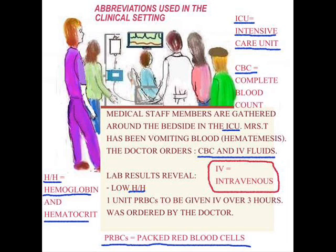Now that the CVC is done, there is a low H and H. H and H stands for hemoglobin and hematocrit. The hemoglobin, if it's low, means that you're lacking in iron red blood cells, which is not very good for carrying oxygen. The hematocrit is actually the circulating volume of red blood cells.